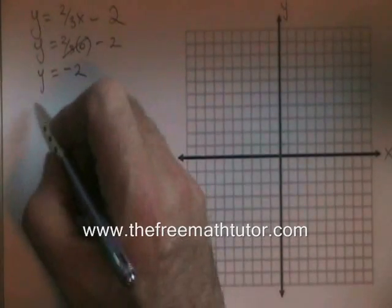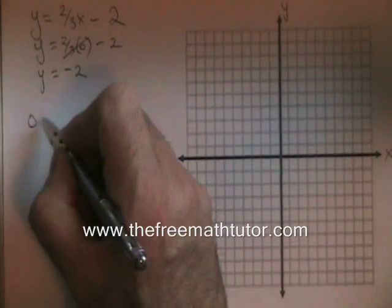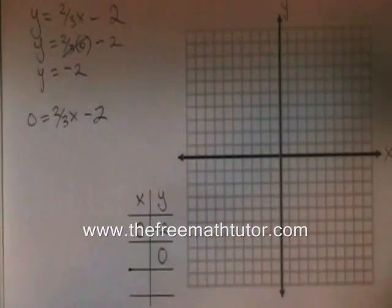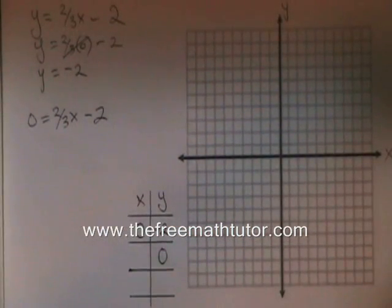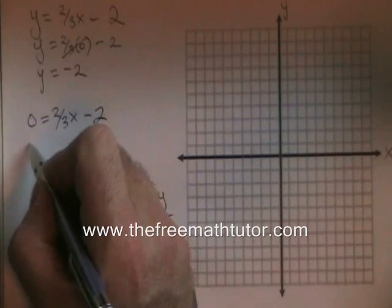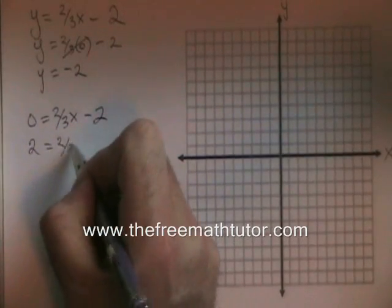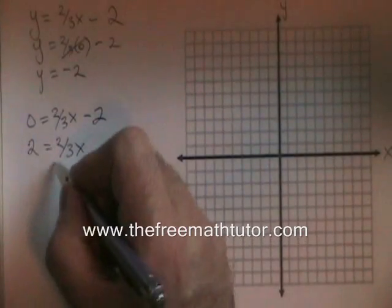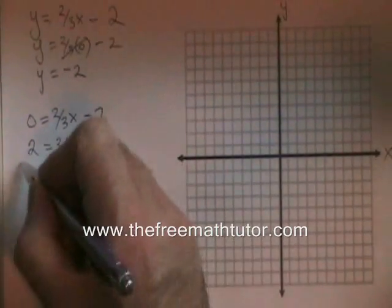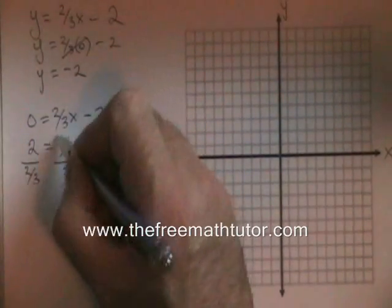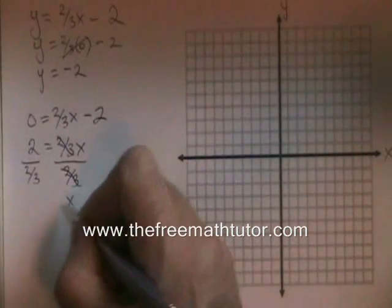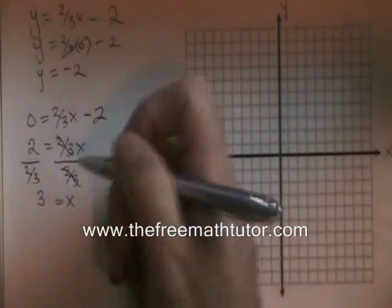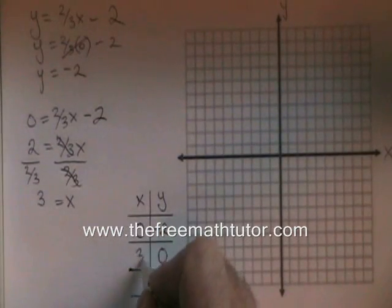If y equals zero, the equation becomes zero equals two-thirds x minus two. If I move the negative two to the left of the equal sign, I have two equals two-thirds x. If I divide both sides by two-thirds, these cancel. My x is isolated, and two divided by two-thirds is equal to three. So I put the three in the table here.